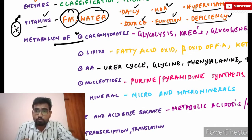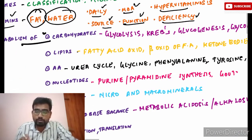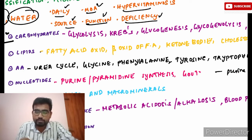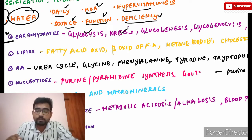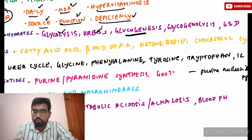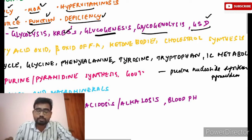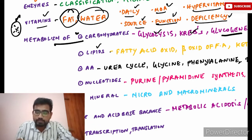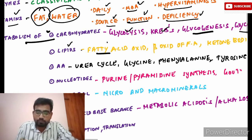Next is the metabolism of carbohydrates. Most questions revolve around the metabolism aspect. Read about glycolysis — how many ATPs are generated — the Krebs cycle, gluconeogenesis, glycogenolysis, and glycogen storage disorders. You should be very thorough on each step of these cycles as well as the key enzymes associated with them.